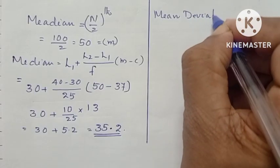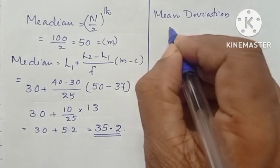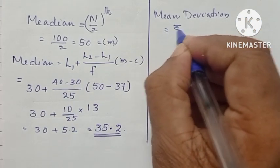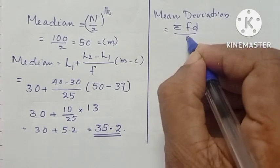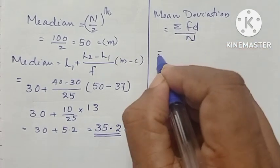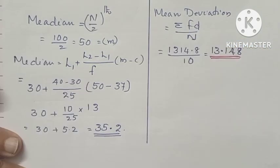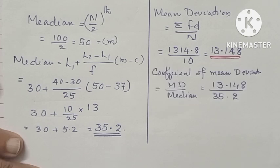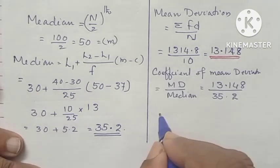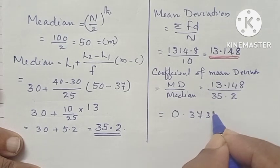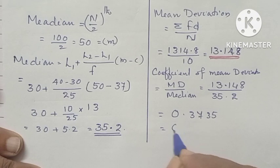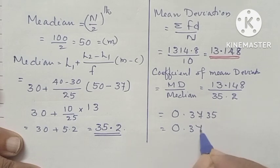Mean deviation we can find by using the formula sigma FD by N. Sigma FD is equal to 1314.8 divided by number of frequency, that is 100. The answer is 13.148. And the coefficient of mean deviation also we will get by substituting the value, 0.3745.